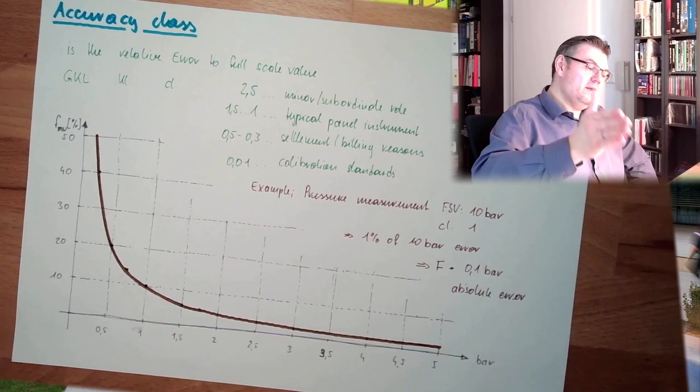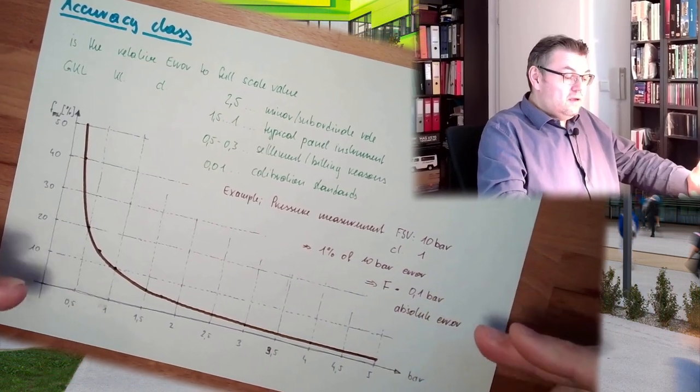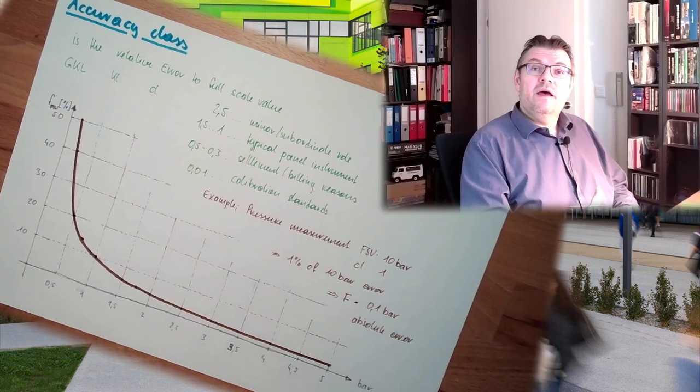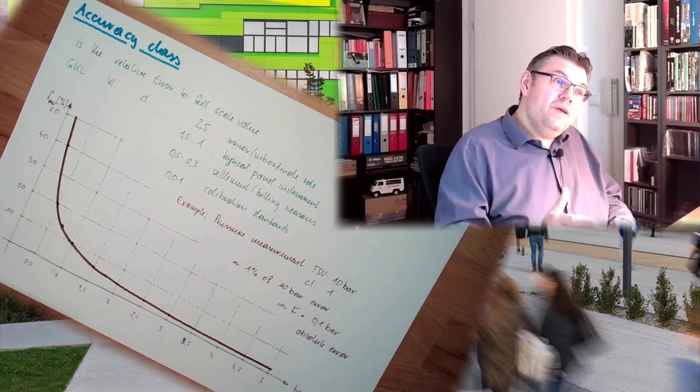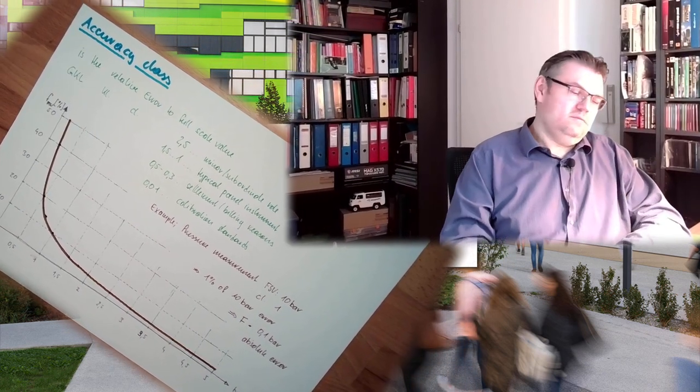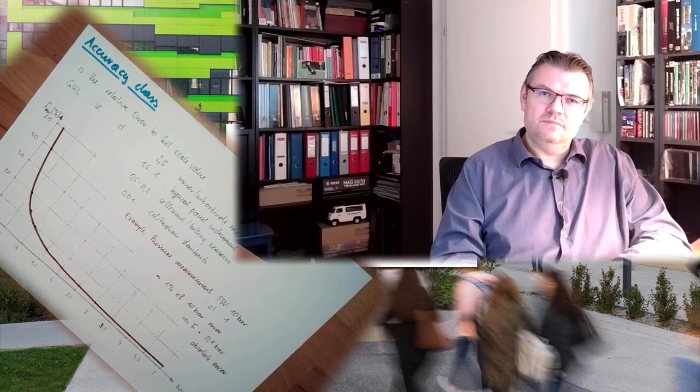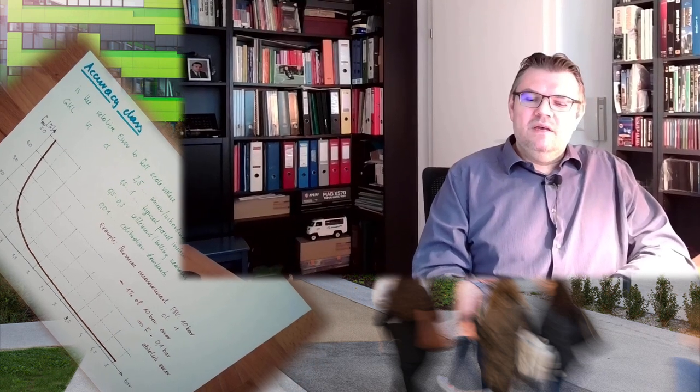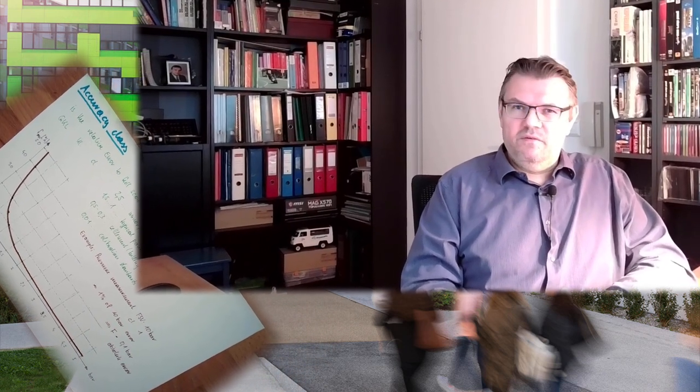So accuracy class and expected... Accuracy class is the error compared to the full-scale value. And the full-scale value has to fit the expected value. This is what you should get from this video. Accuracy class. Next time, we're going to talk about what happens if we are combining different methods of measuring. If I have to measure the resistance of a resistor and I measure voltage and current, then I have two measurements. We have two times error. Both measurements do have random error. What is the total error? What to expect there? This we will talk about in the next video. For this time, thank you very much for listening and goodbye.